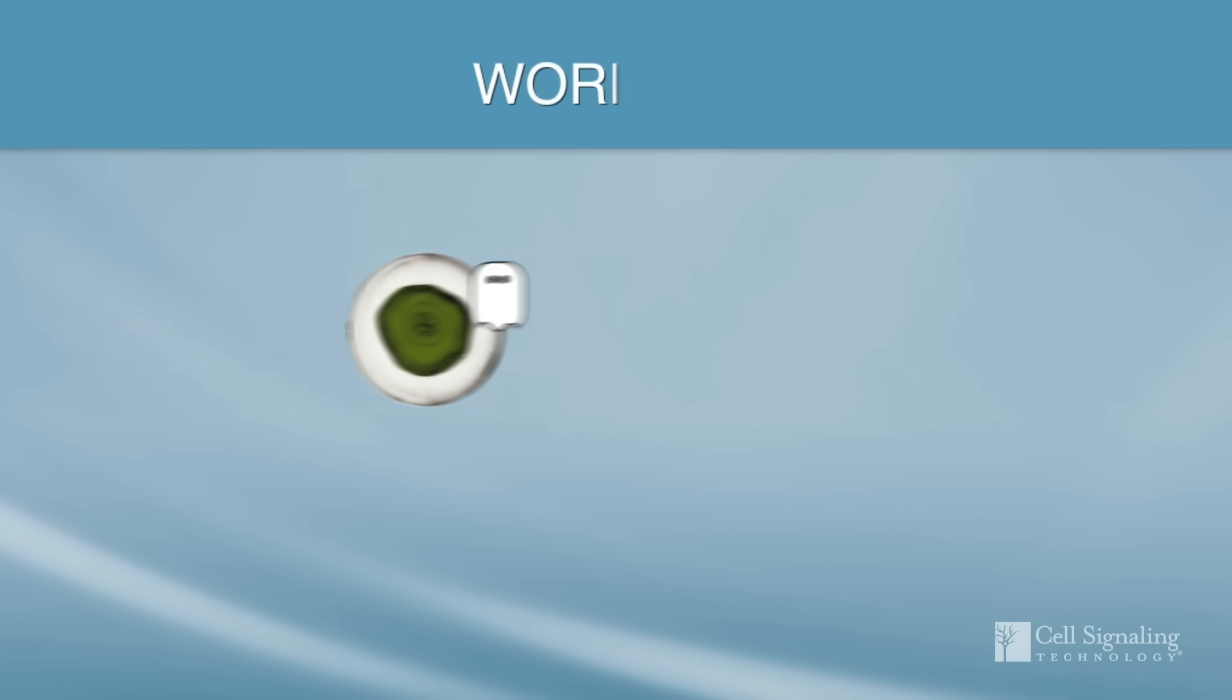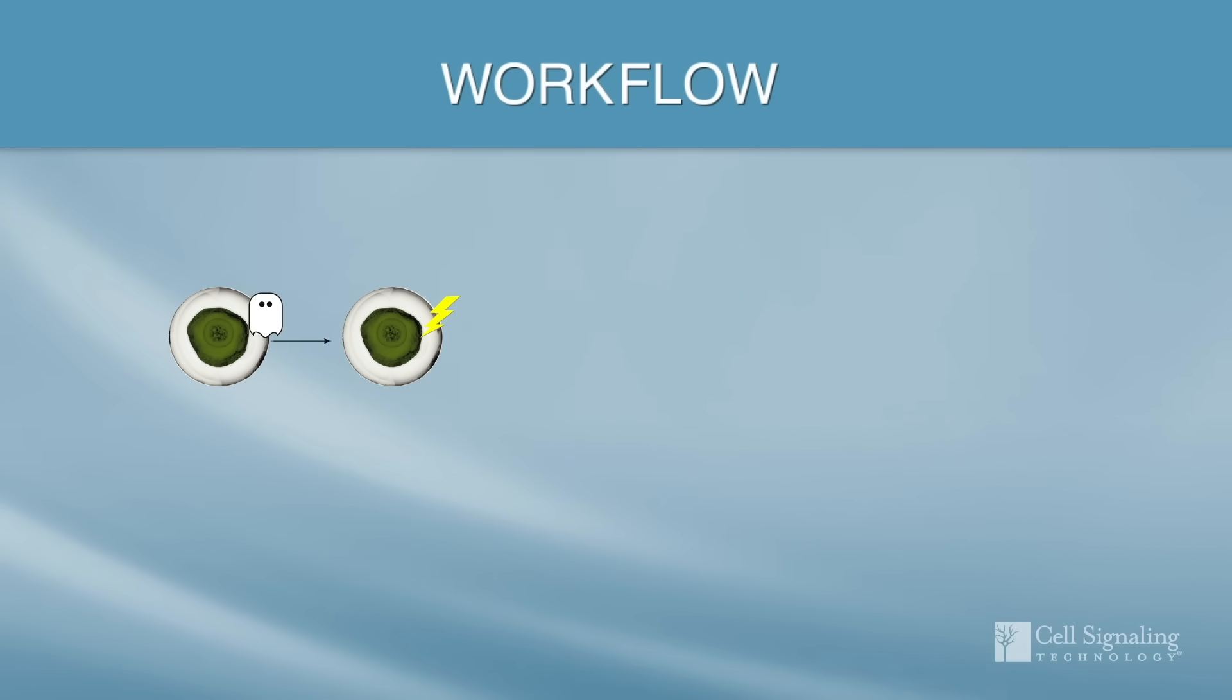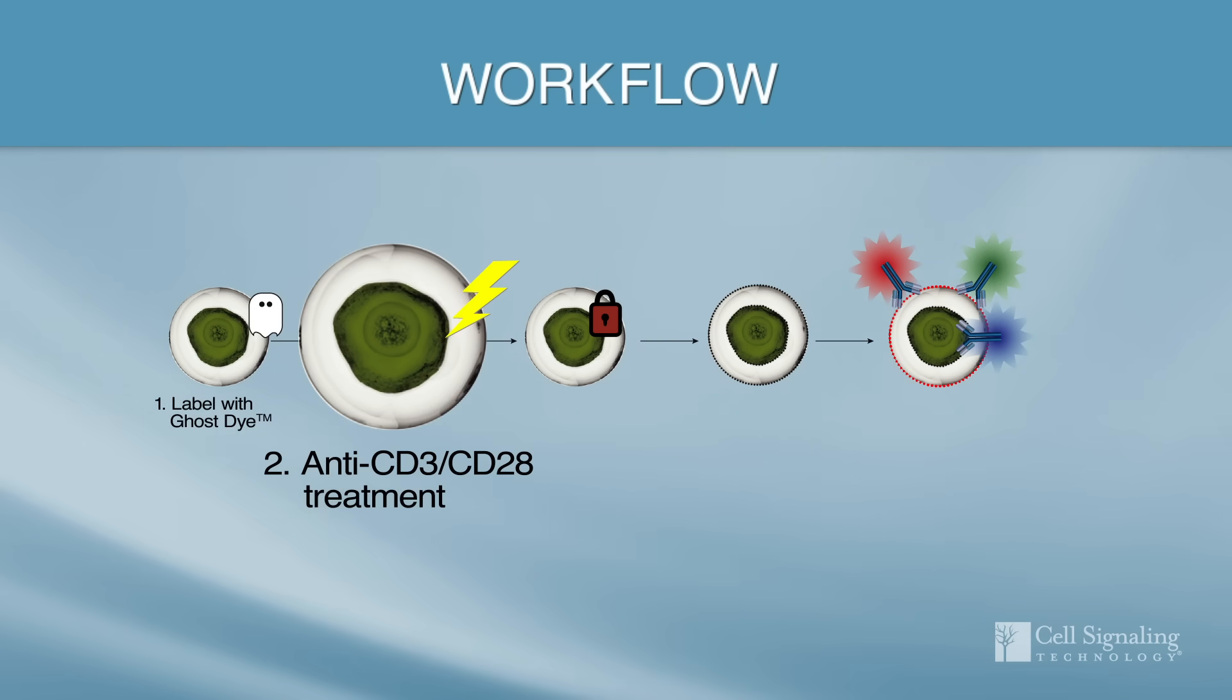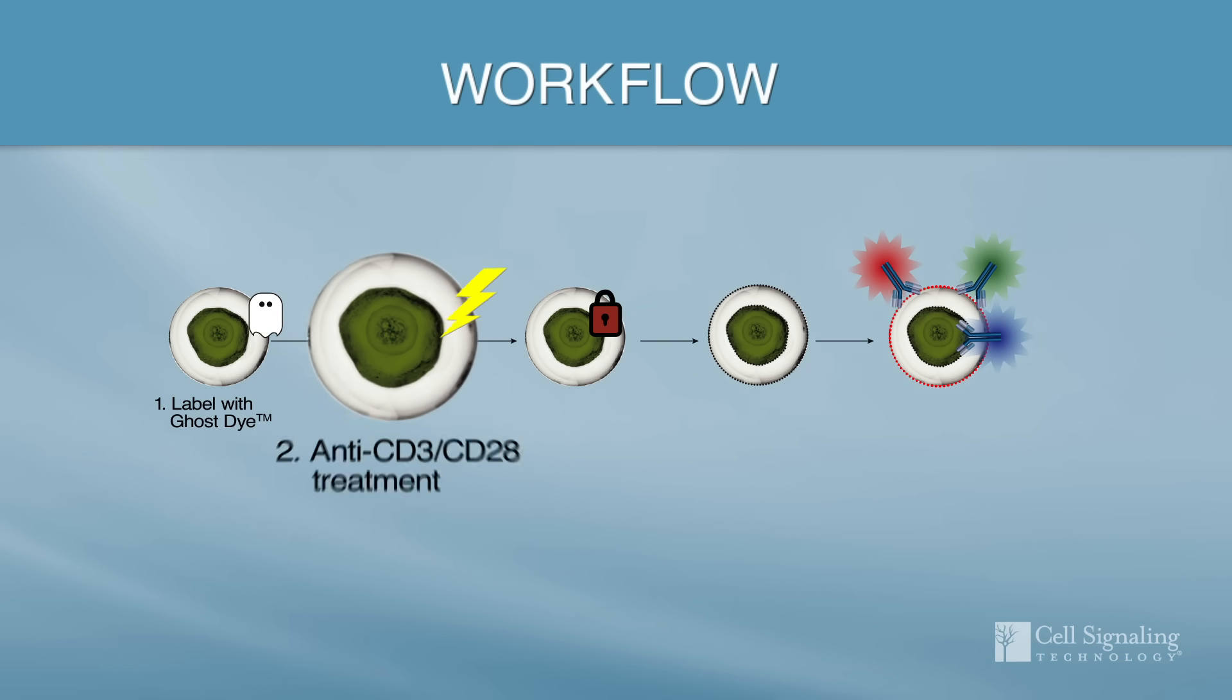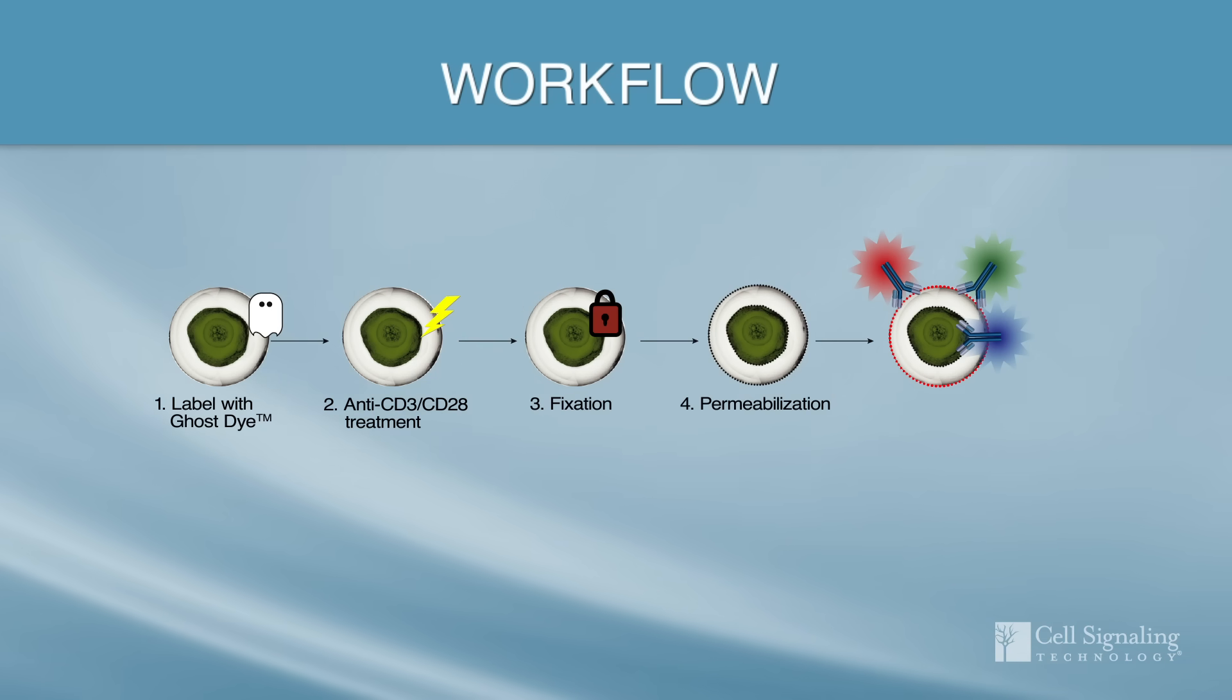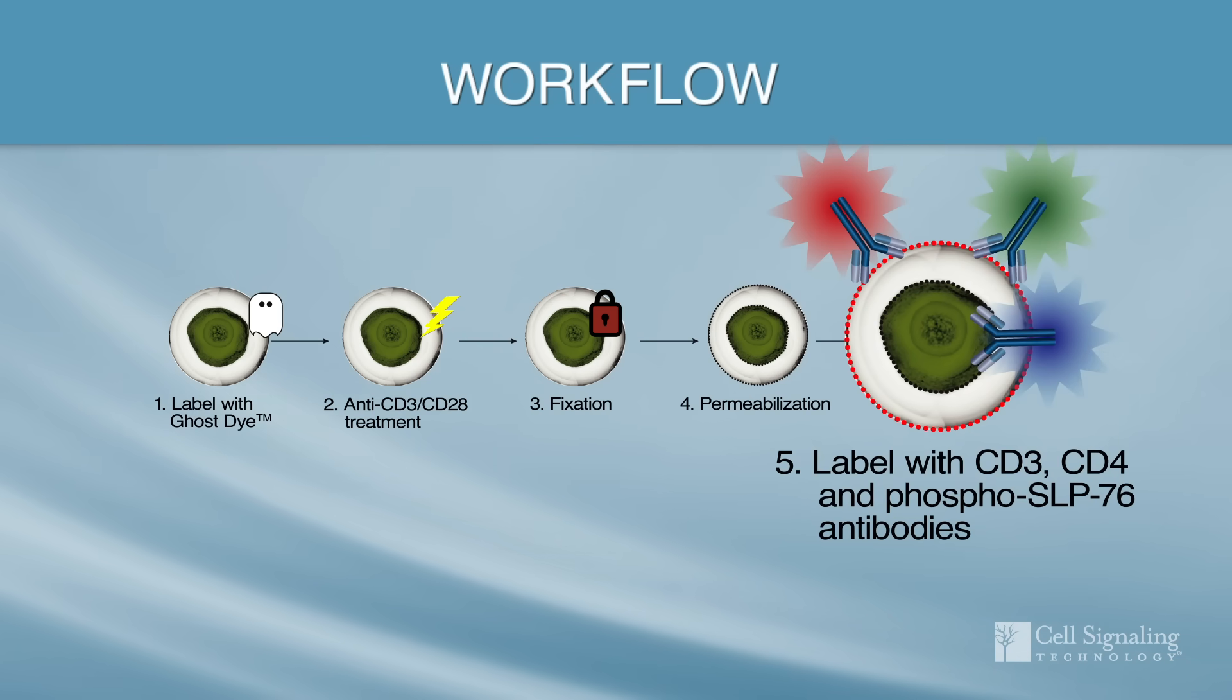To prepare our live PBMCs for flow cytometry analysis, we first incubated cells with Ghost Dye and washed. Then we activated the T cells by treatment with antibodies to induce crosslinking of CD3 and CD28 for 15 minutes prior to fixation, permeabilization, and labeling with antibodies for analysis.